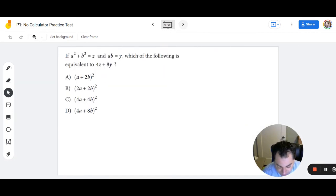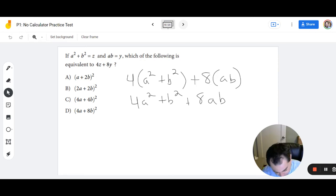Number 10. A squared plus B squared equals Z and AB equals Y. Which of the following is equivalent to 4Z plus 8Y? So we have 4 times Z. So this is going to be 4 times a squared plus b squared plus 8AB. So let's start by distributing the 4. We get 4a squared plus 4b squared plus 8AB. Then I'm going to pull out a greatest common factor of 4. So I have 4 and this is going to be a squared plus b squared plus 2AB.